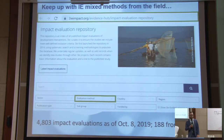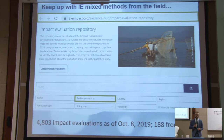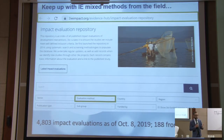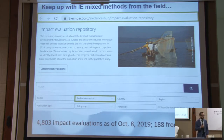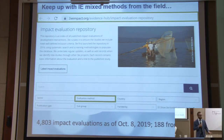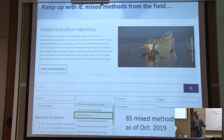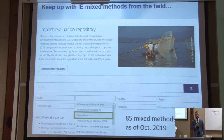There are mixed-methods impact evaluations in the 3IE repository. If you're interested in looking at examples of what other researchers have done for applying qualitative evidence in impact evaluations, you can go through the website. As of a couple of days ago, there are 4,803 impact evaluations on the website, 188 of which are from Brazil. And if you select 'mixed methods' from the drop-down, there are 85 — so any of those 85 mixed-methods impact evaluations will have their methods written up for how they tried to approach their research question. It's a useful place to get ideas about what other people are doing.